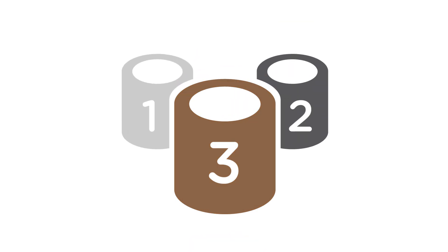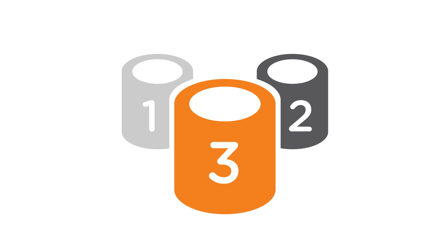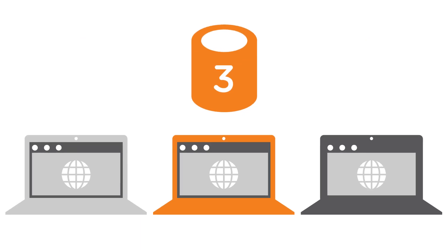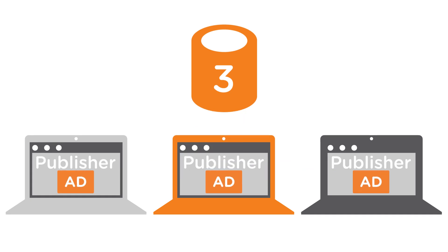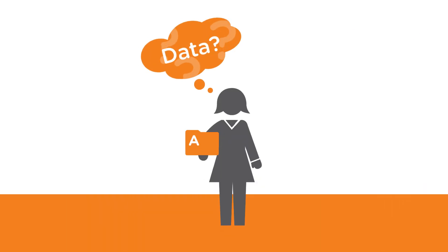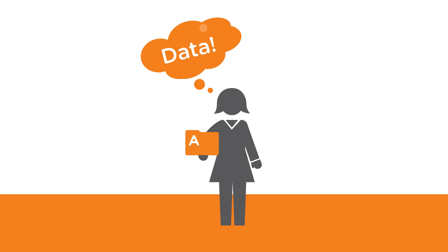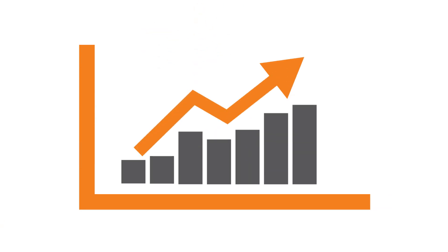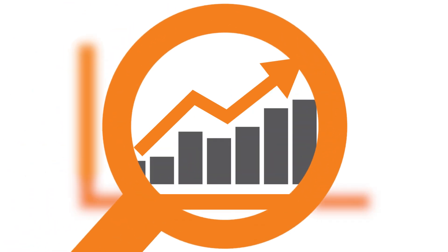So advertisers set up their own third-party ad servers and had publishers redirect page requests for creative to those. Now the same ad could run with multiple publishers at once. Plus, advertisers could more easily change creative in the middle of a campaign. Even better, advertisers now had first-hand and real-time performance data. Both ad buyers and sellers can now handle complexity at scale with more control and visibility.